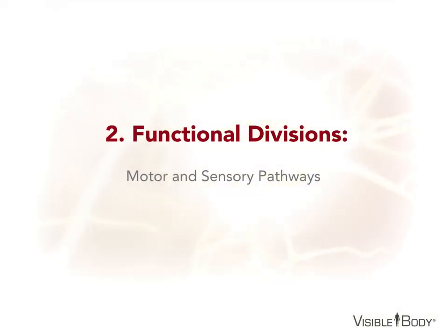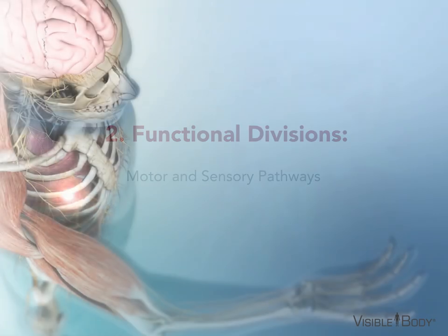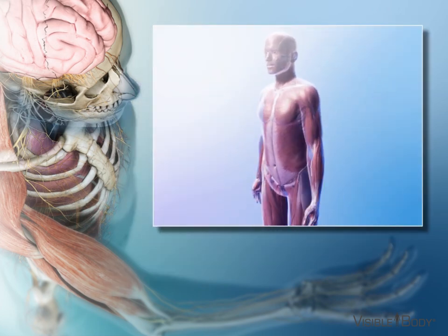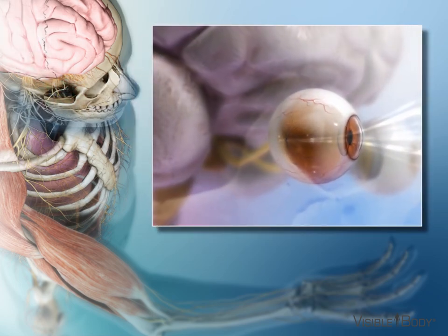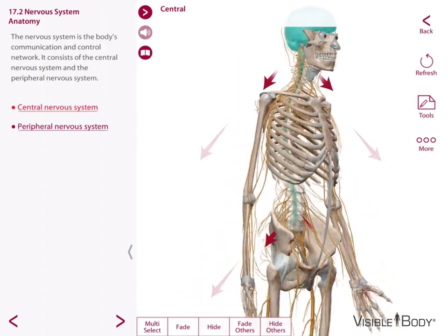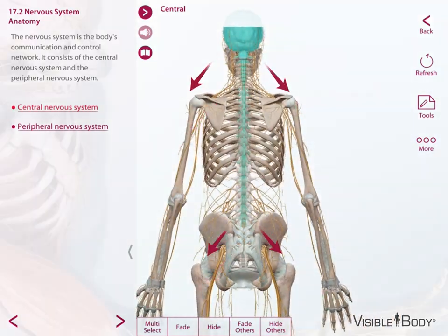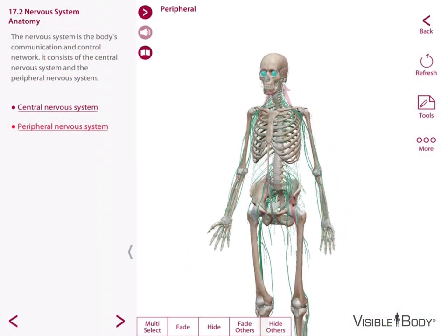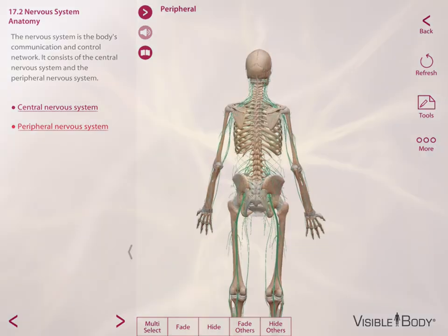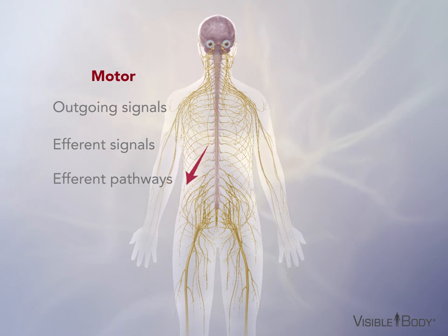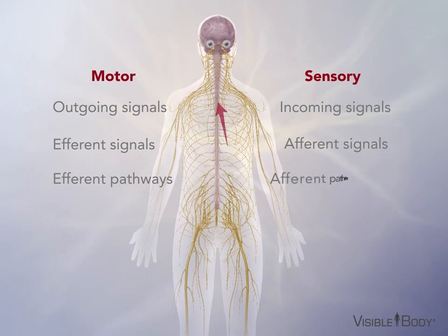Part 2: Functional Divisions. Another way to organize the nervous system is by function. Some axons carry signals from the CNS out to the periphery in order to control organs, muscles, or physiological processes. Since these signals control actions, we call them motor neurons. Motor signals travel from cell to cell along a motor pathway. Sensory organs send information from the periphery to the CNS via sensory neurons along sensory pathways. Motor or outgoing signals are also called efferent signals, traveling along efferent pathways. Sensory or incoming signals are also called afferent signals, and they travel along afferent pathways.